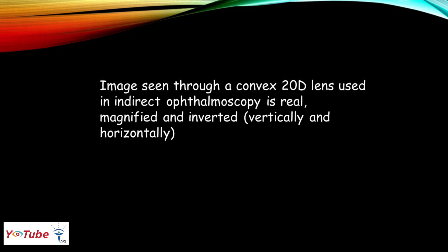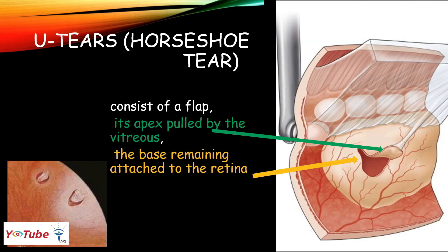The location I will be describing is based on the quadrant I am examining. The first lesion I will discuss is a U-shaped tear, also known as a horseshoe tear or HST. It consists of a flap whose apex is pulled by the vitreous while the base remains attached to the retina. Here is how it looks.